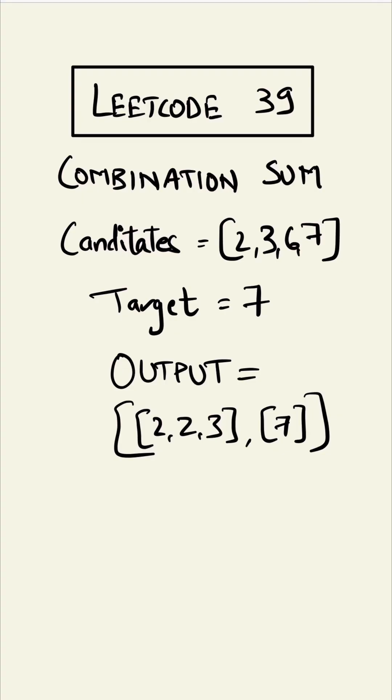We'll be solving LeetCode 39, combination sum. In this question we are given a list called candidates and a target, so we have to give output as a list of lists.